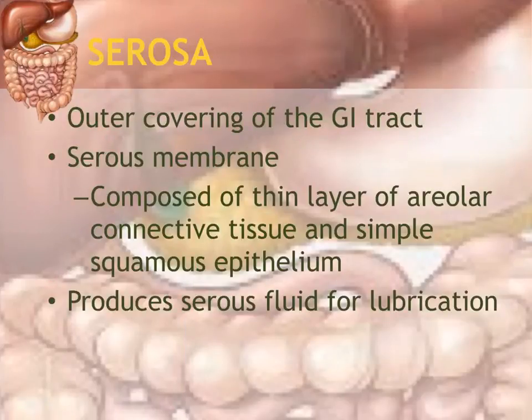The serosa is the outermost layer, mostly made up of connective tissue. It is another name for the serous membrane, which produces serous fluid to keep the organs moist.